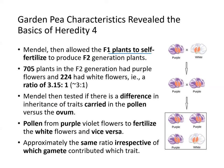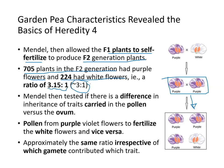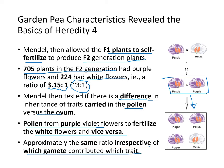Mendel then allowed the F1 plants to self-fertilize, producing the filial 2 or second generation plants. 705 plants in F2 had purple flowers and 224 had white flowers — a ratio of about 3.15 to 1, approximately 3 to 1. Mendel then tested if there was a difference in inheritance of traits carried in pollen versus the ova — he took pollen from white flowers and did the same thing — and observed approximately the same ratios, irrespective of which gamete contributed which trait.